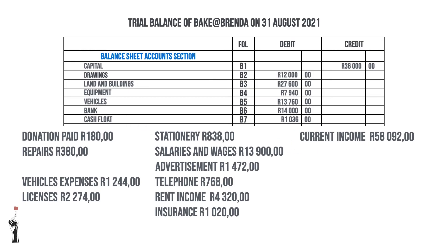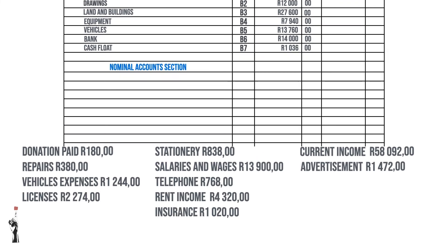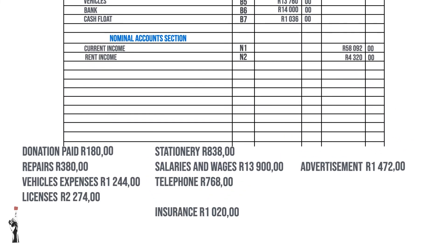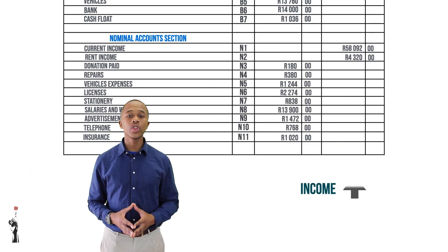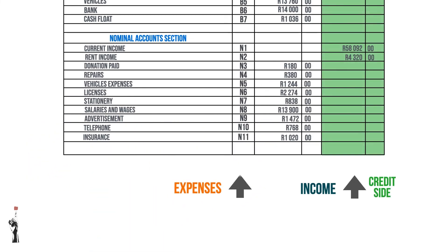Now it's time for the nominal account section of the trial balance, which consists of income and expenses. Income will increase on the credit side and expenses will increase on the debit side.